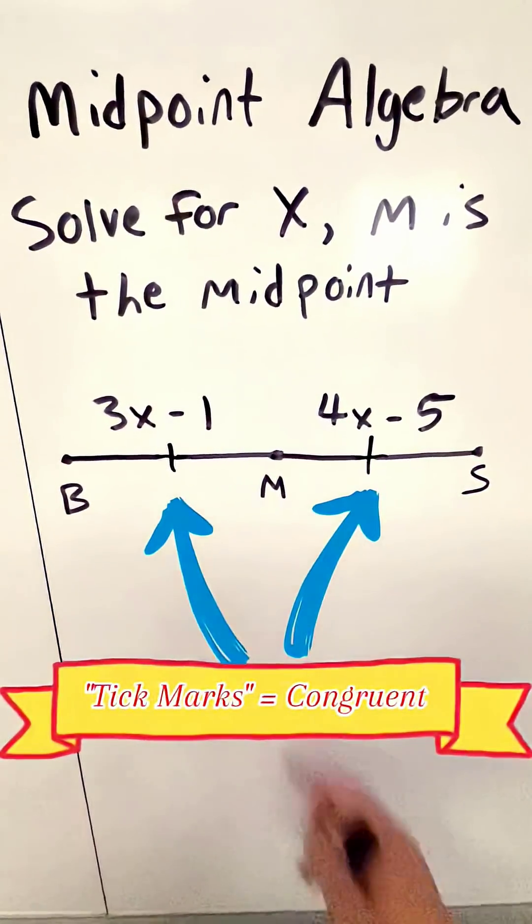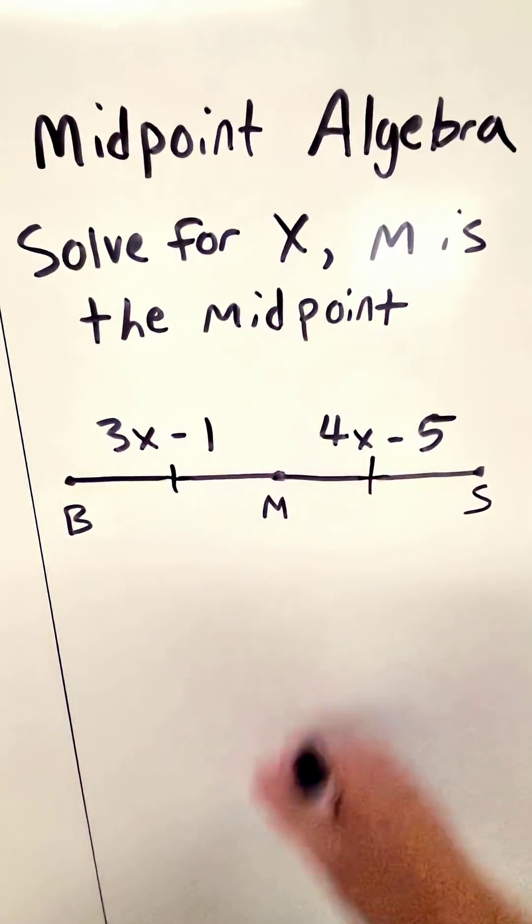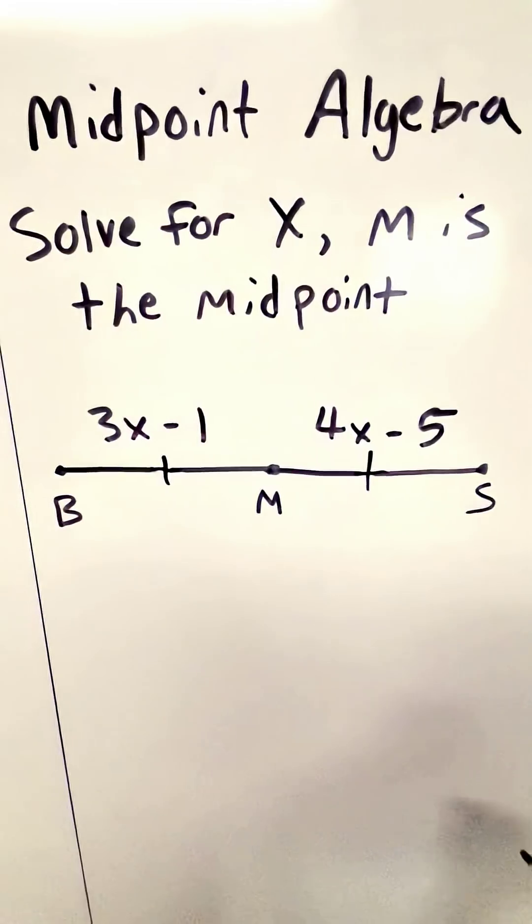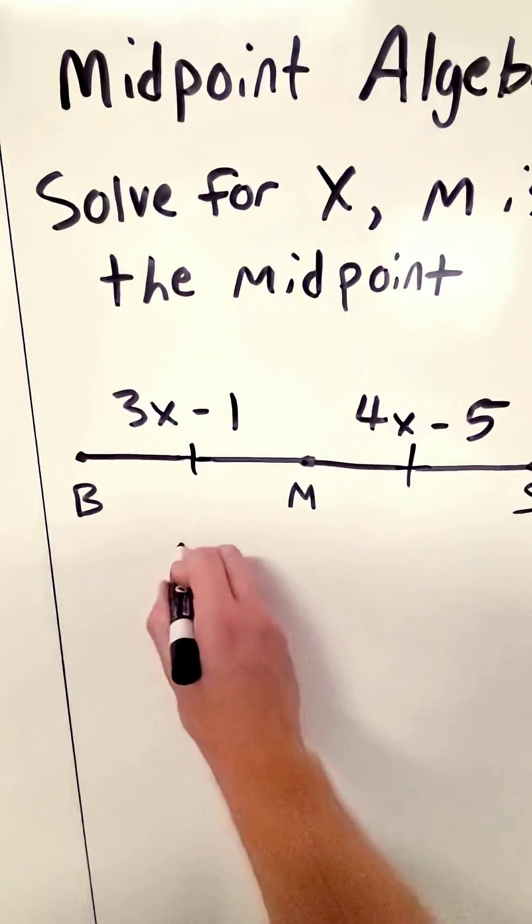So if we have these two parts being the same, 3x minus 1 and 4x minus 5, and we're trying to solve for x, we should set them equal to each other because we know the parts are the same.